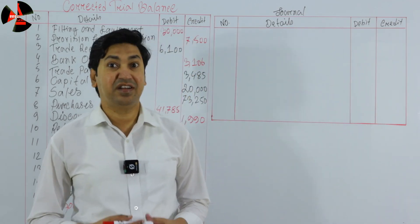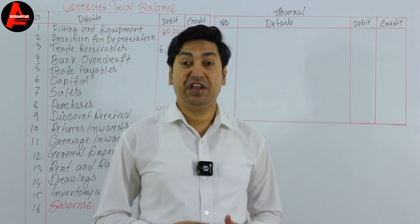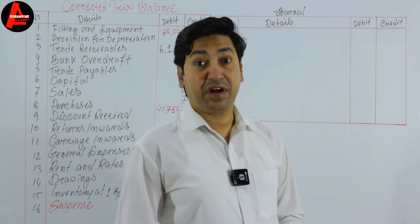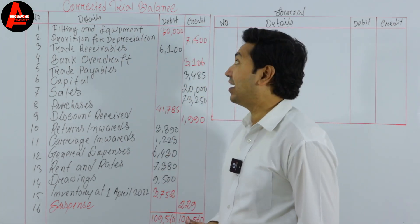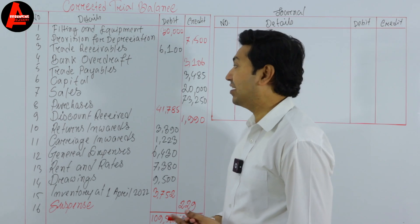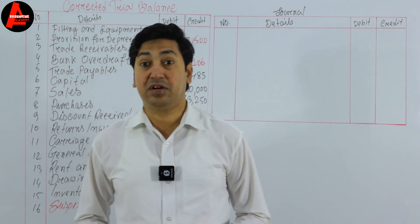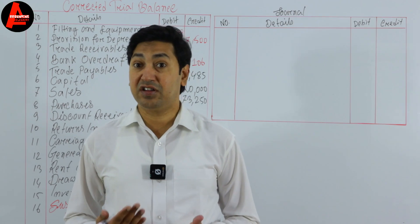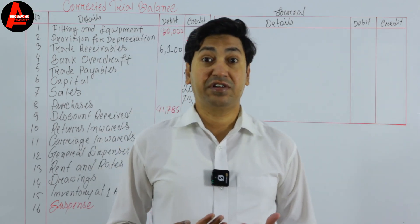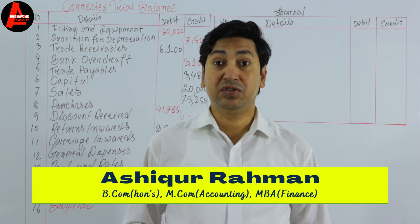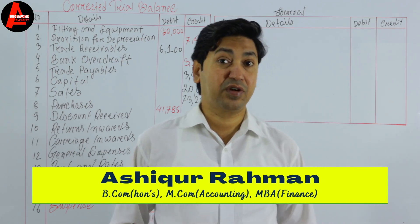This is the second part: correction of errors journal entry. In the first part, we rectified the trial balance and prepared a corrected trial balance. Correction of errors is a must on the question paper, so you need to understand and answer this question in your exam.